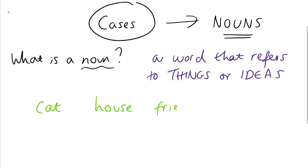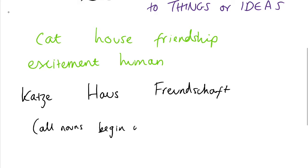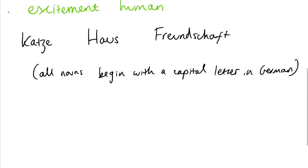I think that's a good definition. So in English we have the examples Cat, House, Friendship, Excitement or Human. And in German then we could say Katze, Haus or Freundschaft. And you can see here the great thing about German is that all nouns begin with a capital letter. So you know what is a noun.